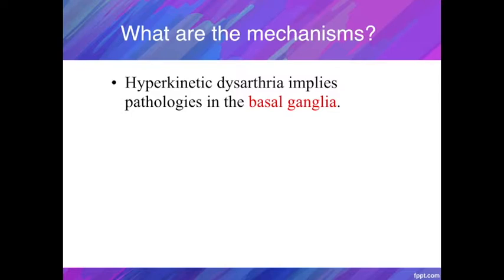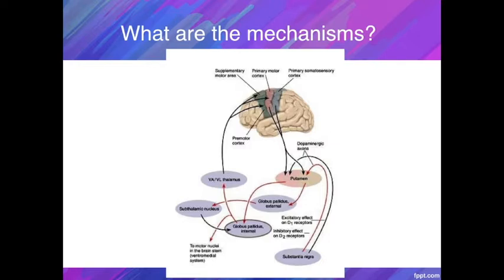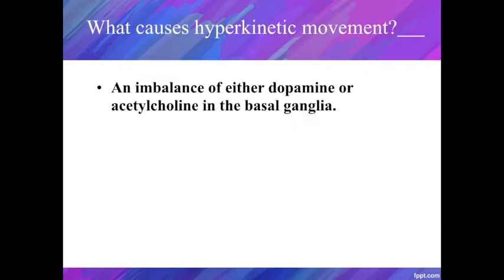Let's talk about the mechanisms of hyperkinetic dysarthria. It is caused by damage to the basal ganglia, a group of deep structures in the brain. It's not fully understood how all these movement disorders occur from the basal ganglia, as the control circuits in this area are very complicated. Some of them suppress movements and some of them excite movements. One theory suggests that when the different neurotransmitters are not balanced, it can result in excessive movements, and when those excessive movements affect speech, then it's hyperkinetic dysarthria.